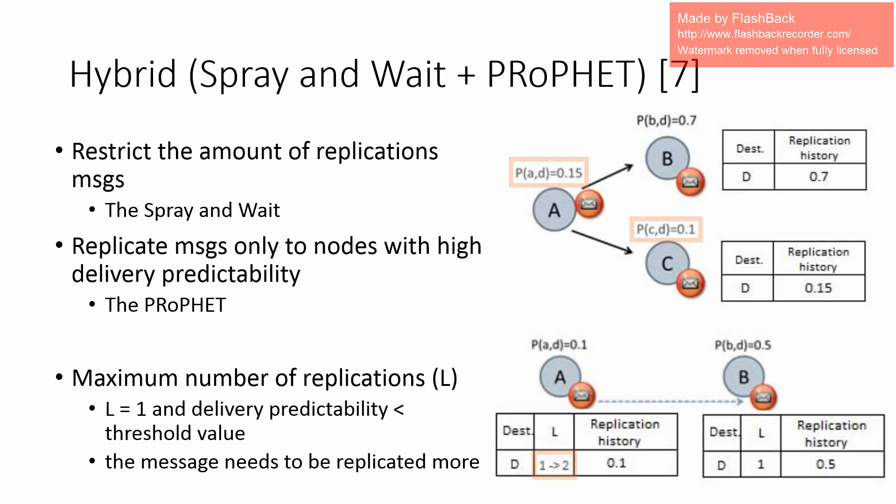There is a combination of the two previous works: Spray-and-Wait and PRoPHET. The authors use both to address the main drawback of epidemic routing, which is the number of message copies on the network. They adjust the level of replication based on the parameter L and the replication history. The replication history represents the probability of a message being delivered, which they claim solves the main problem of epidemic routing.